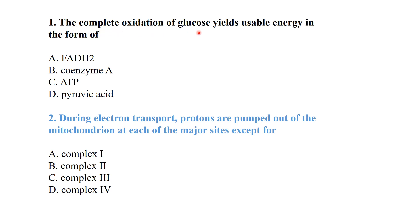MCQ number one: the complete oxidation of glucose yields usable energy in the form of ATP. When glucose is oxidized, the complete oxidation of glucose will produce ATP — the energy currency of the cell, adenosine triphosphate. During electron transport, protons are pumped out of the mitochondria at each of the major sites.